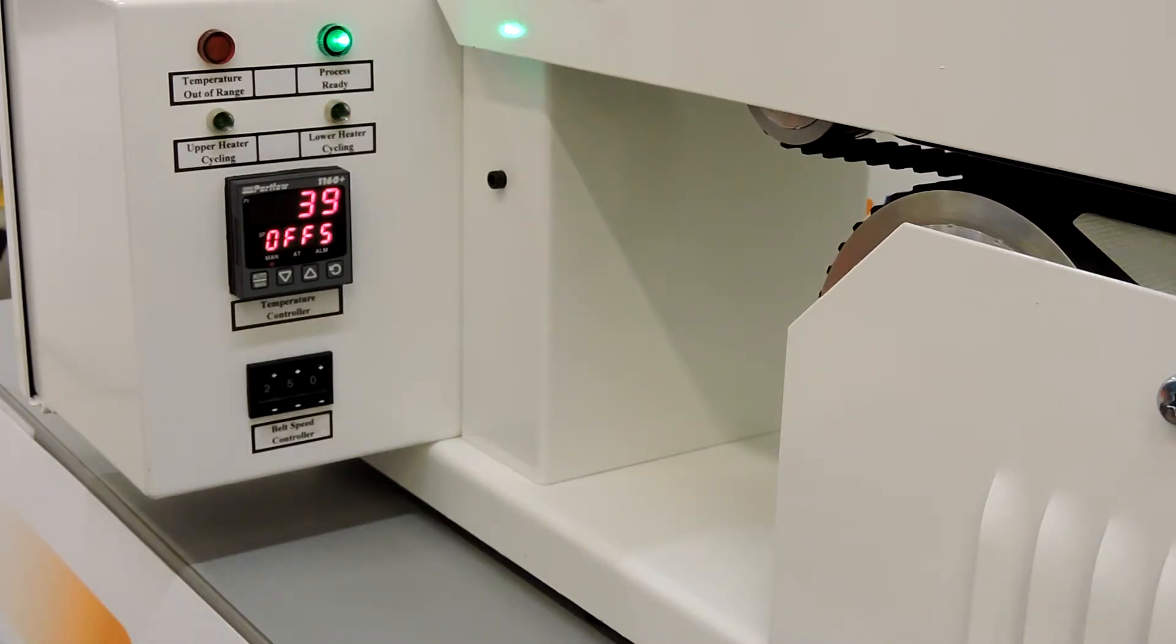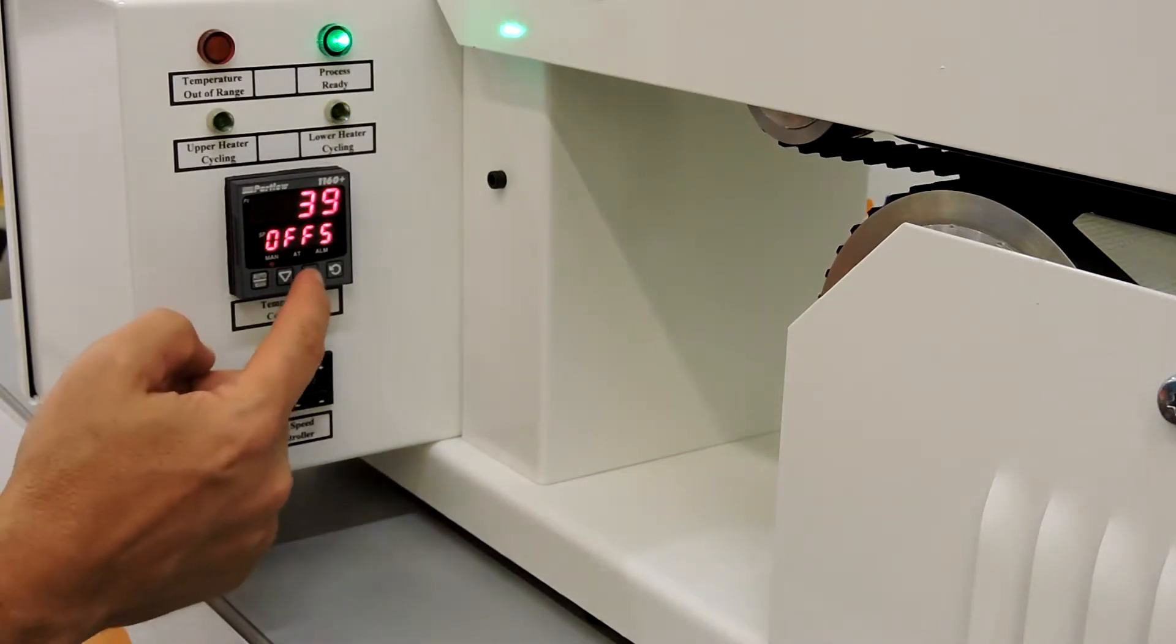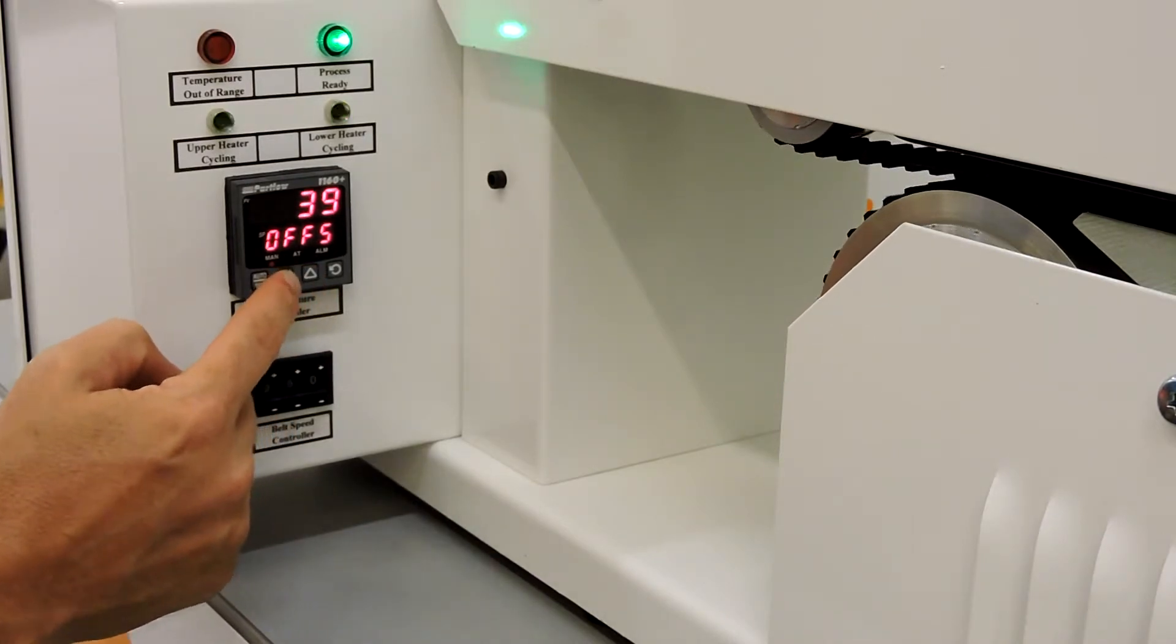As a rule of thumb, adjust the offset two degrees for every one degree of the actual probe readings from the temperature probe.